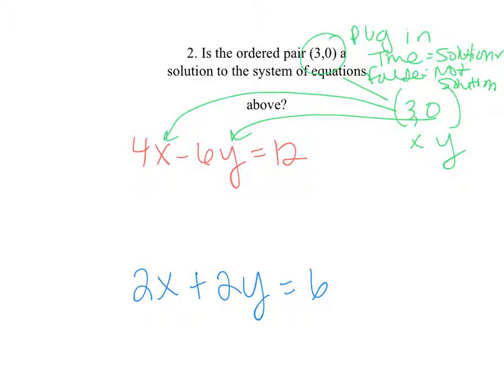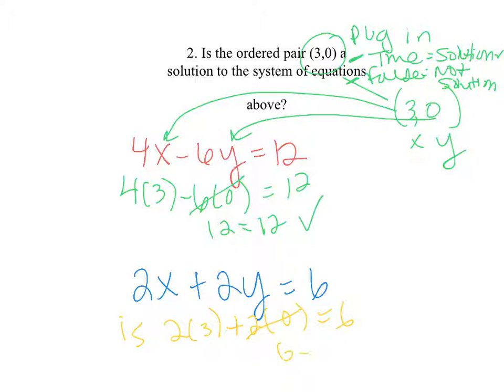In order to confirm that an ordered pair is or is not a solution, you plug in. If it's true, then it will be a solution. If it's false, it will not be a solution. So if I plug in, I get 4 times 3 minus 6 times 0 equal to 12. Does 12 equal 12? Yes. Now it needs to work for the next. Is 2 times 3 plus 2 times 0 equal to 6? Yes. Therefore, 3 comma 0 is a solution. You can do these three little dots there for your math symbol.